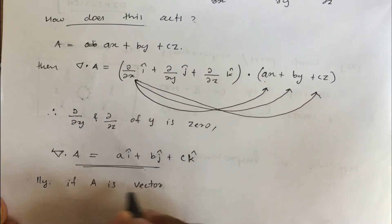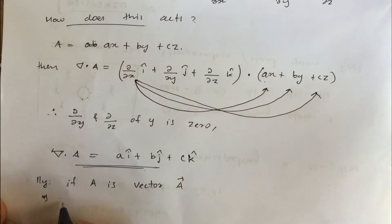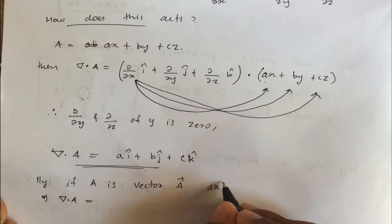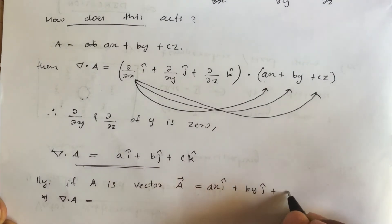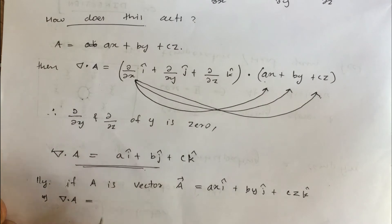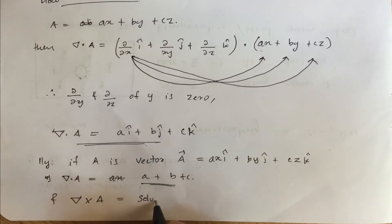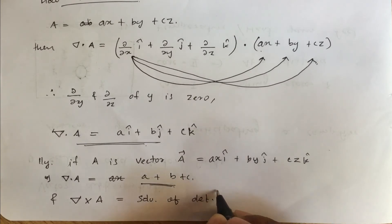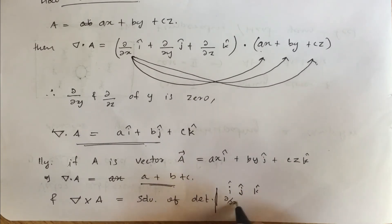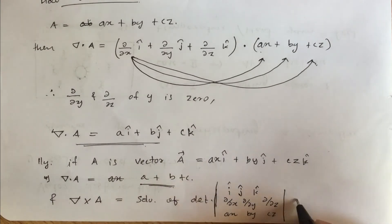Similarly, if A is a vector, vector A equal to ax i plus by j plus cz k, then del dot A is a plus b plus c, which is the gradient. And for del cross A, we have to solve the determinant.